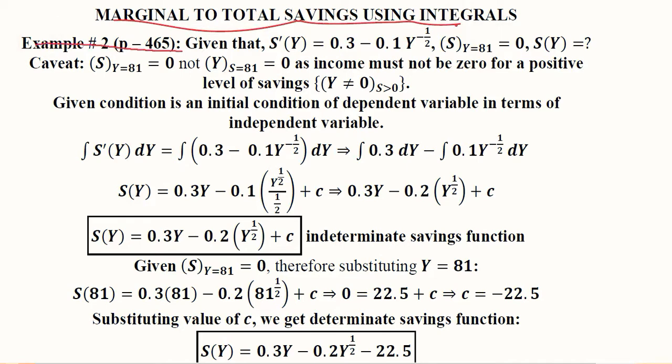This is example number 2 from Chiang's book of mathematical economics, page 465. The savings function is given in its marginal form, S'(Y) = 0.3 - 0.1Y^(-1/2). The dash shows this is the marginal version of the savings function, the marginal propensity to save.